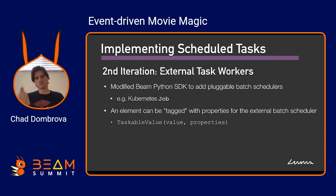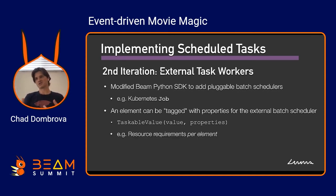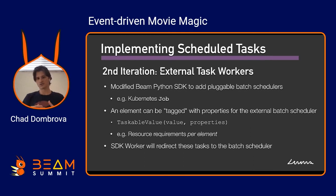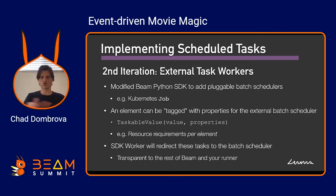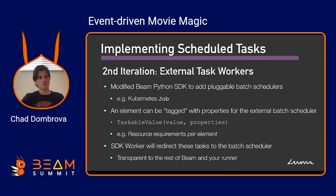We have a class called a TaskableValue. You can write a transform that detects values in your stream that should be executed externally, wraps them in this TaskableValue class, and gives it properties like amount of CPU and RAM required for that particular task. The SDK worker, as it iterates over this stream of data, detects those tasks that should be externalized and sends them off. This is transparent to the rest of Beam and the runner. We spin up little clones of the SDK worker that are transient — lasting only for the lifespan of that task — with the whole control plane and data plane hooked up so they look just like another SDK worker in the pool.